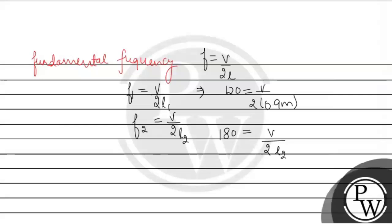Dividing equation number first and equation number second, you will get 120 divided by 180 equals 1 divided by 0.9 whole divided by 1 by l2. Therefore this will be equals to l2 divided by 0.9.